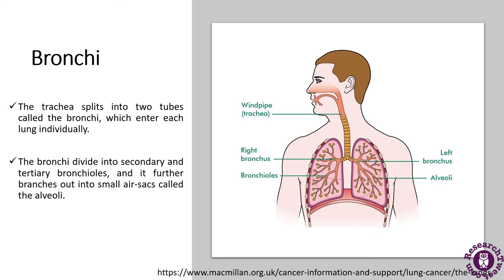Next is the bronchi. As you can see, there is a left and a right bronchus. The trachea splits into two tubes called the bronchi, which enter each lung individually. The bronchi then divide into secondary and tertiary bronchioles, which further branch out into small air sacs called the alveoli. The alveoli are single-cell sacs of air with thin walls, and they facilitate the exchange of oxygen and carbon dioxide molecules into or away from the bloodstream.